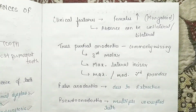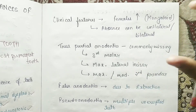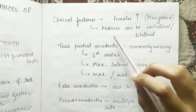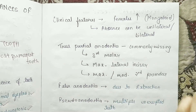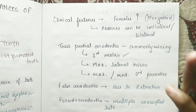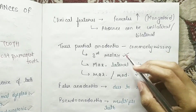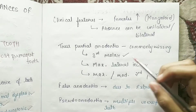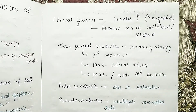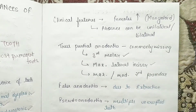The clinical features: anodontia is seen most in females, mainly in Mongoloid ancestors. Absence can be unilateral or bilateral. Commonly missing teeth — first of all, the third molar. This is very common — most humans are missing third molars, so we say it is partial anodontia.